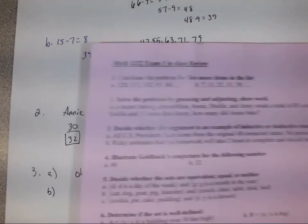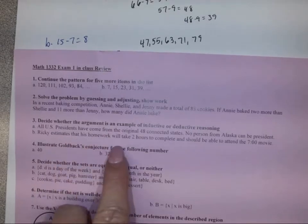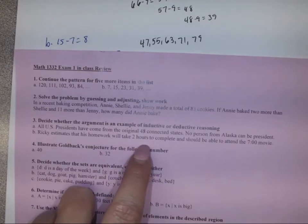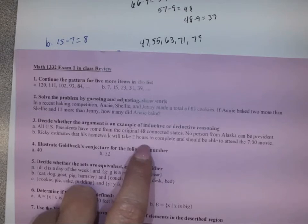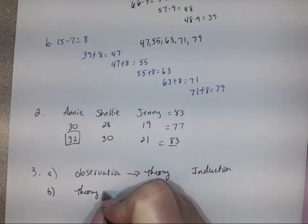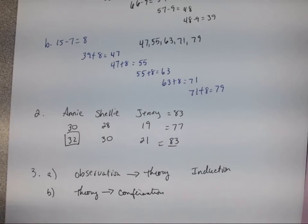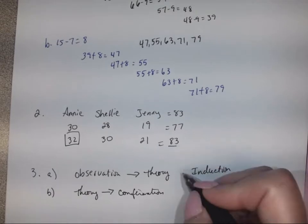Part B: Ricky estimates that his homework will take two hours to complete and should be able to attend the 7 o'clock movie. Ricky is theorizing he can complete homework in two hours, then confirming he can attend the movie. He starts with a general theory and moves to a specific conclusion. Going from general to specific makes this deductive reasoning.